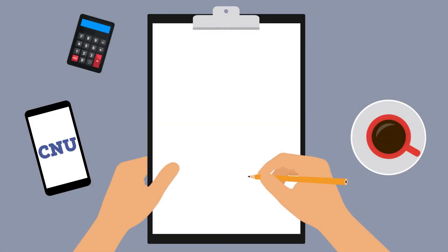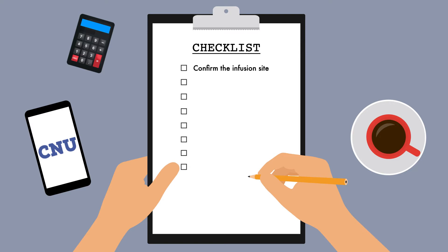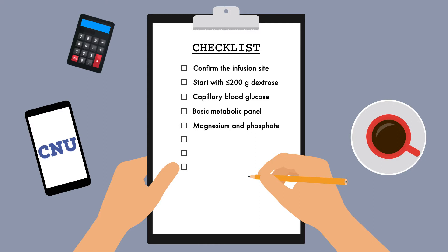Prior to starting any patient on parenteral nutrition, there are a few precautions that should be taken. I have put them on a checklist for you. The checklist is there to make sure you confirm the infusion site, start the infusion with no more than 200 grams of dextrose, obtain a capillary blood glucose concentration, obtain a basic metabolic panel with magnesium and phosphate, obtain liver function tests, obtain serum triglycerides, and obtain a body weight measurement. These tasks can be completed in any order.